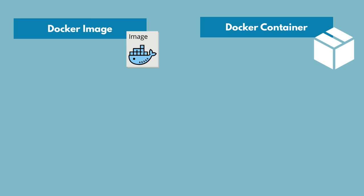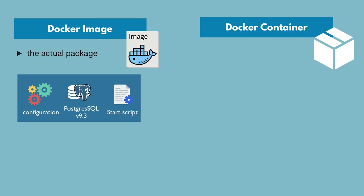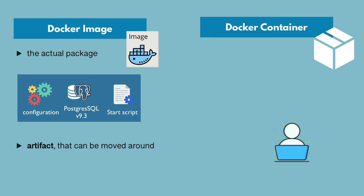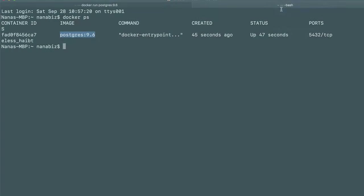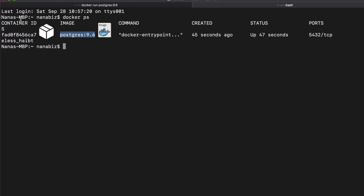Here Docker PS shows the active running containers with a container ID, the image it's running from, some entry commands, and status information. PostgreSQL is now running on my local machine — simple as that. If I needed another version of Postgres running at the same time, I could just run another Docker command.